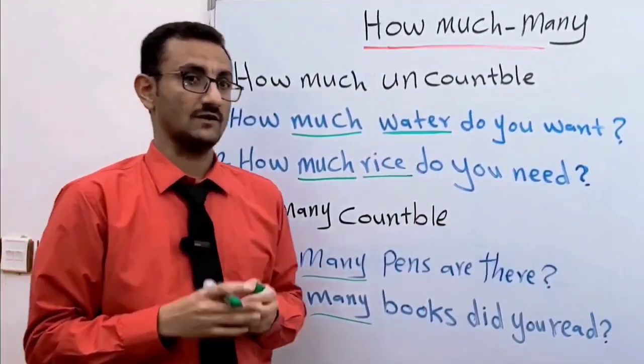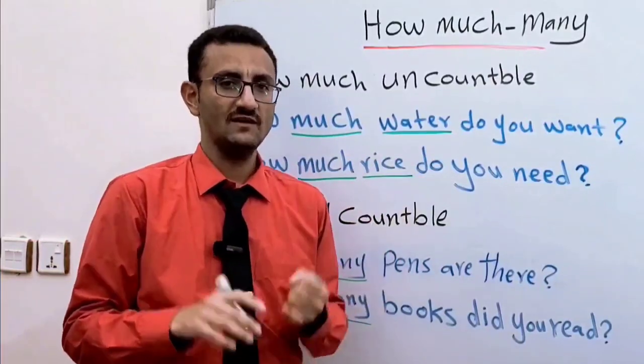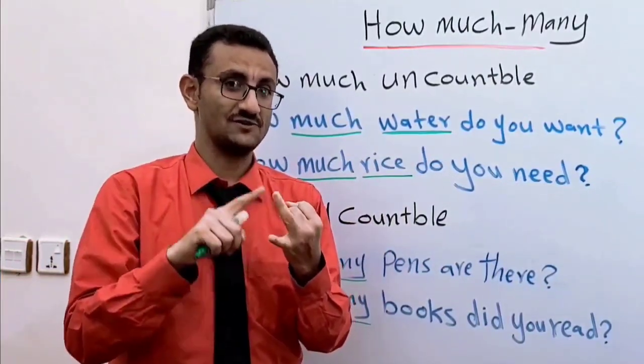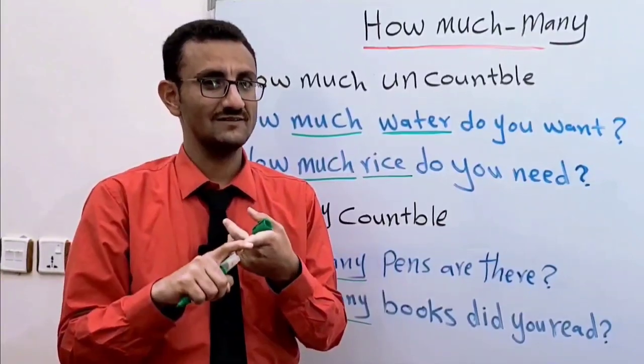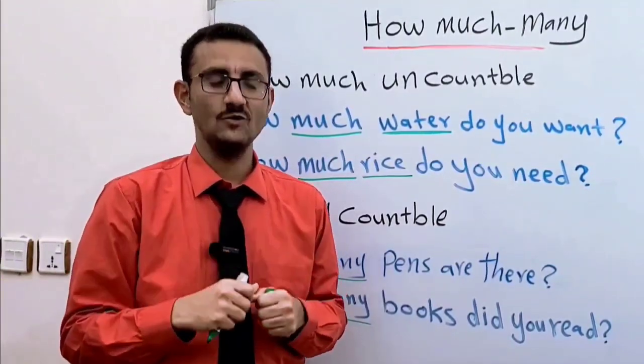الأسماء الغير معدودة - uncountable nouns. There are many examples: rice, very good, sugar, good, water, milk, and so many words. والكثير من الأمثلة.